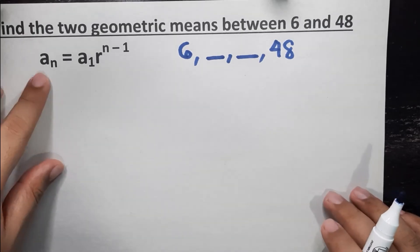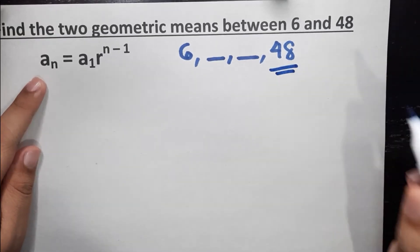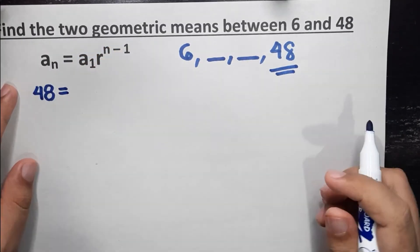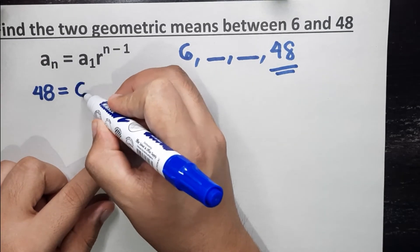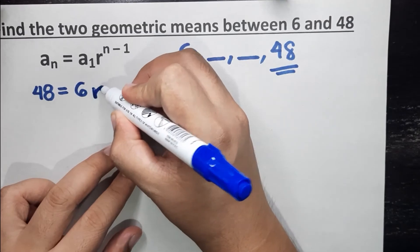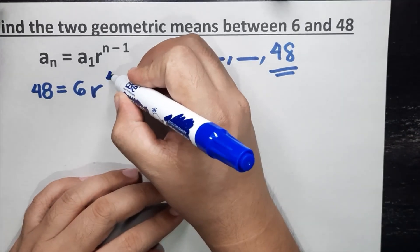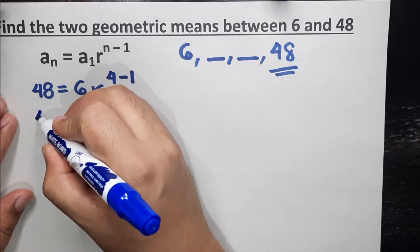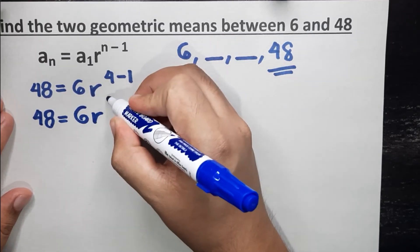Let's solve. a sub n refers to the last term of the sequence, and we have our last term which is 48. So substituting: 48 is equal to a sub 1, which is the first term, which is 6. We don't have a common ratio yet, so this is r. Our n here is the number of terms overall: 1, 2, 3, 4. So 4 minus 1.